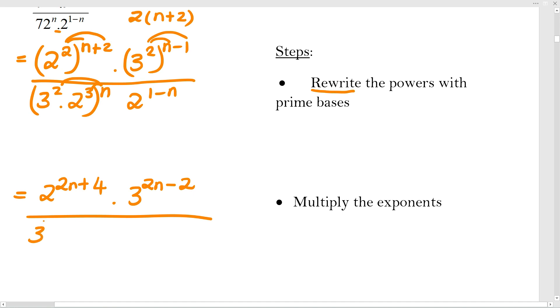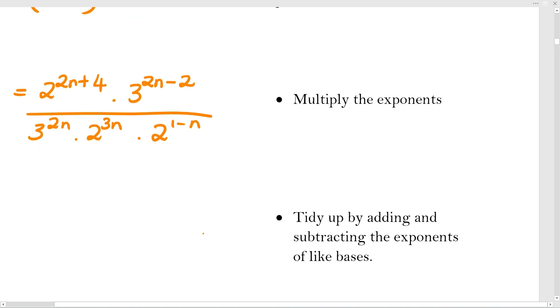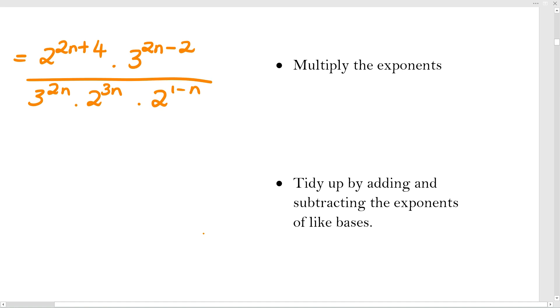At the bottom my 2 to the 1 minus n stays exactly the way it was given. What I'm going to do now is my second last step, which is tidying up by adding and subtracting the exponents of like bases. So the way I'm going to do that, I've got exponents that are n's, so I don't actually know if they're positive or negative, so I'm going to put everything on the top, and then if I end up with something negative, I'll move it to the bottom.